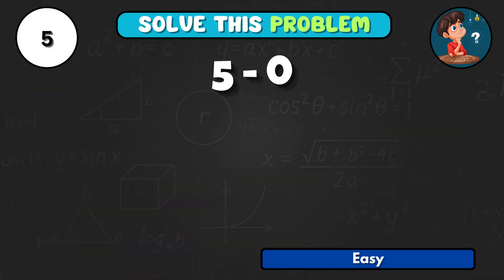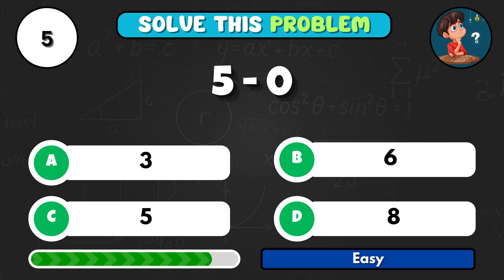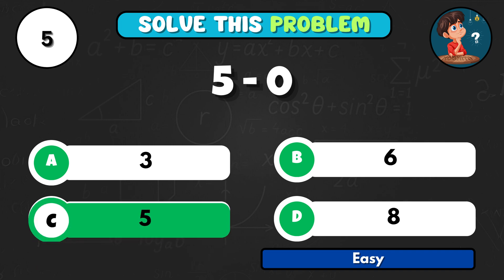5 take away 0 equals? The solution is C5.